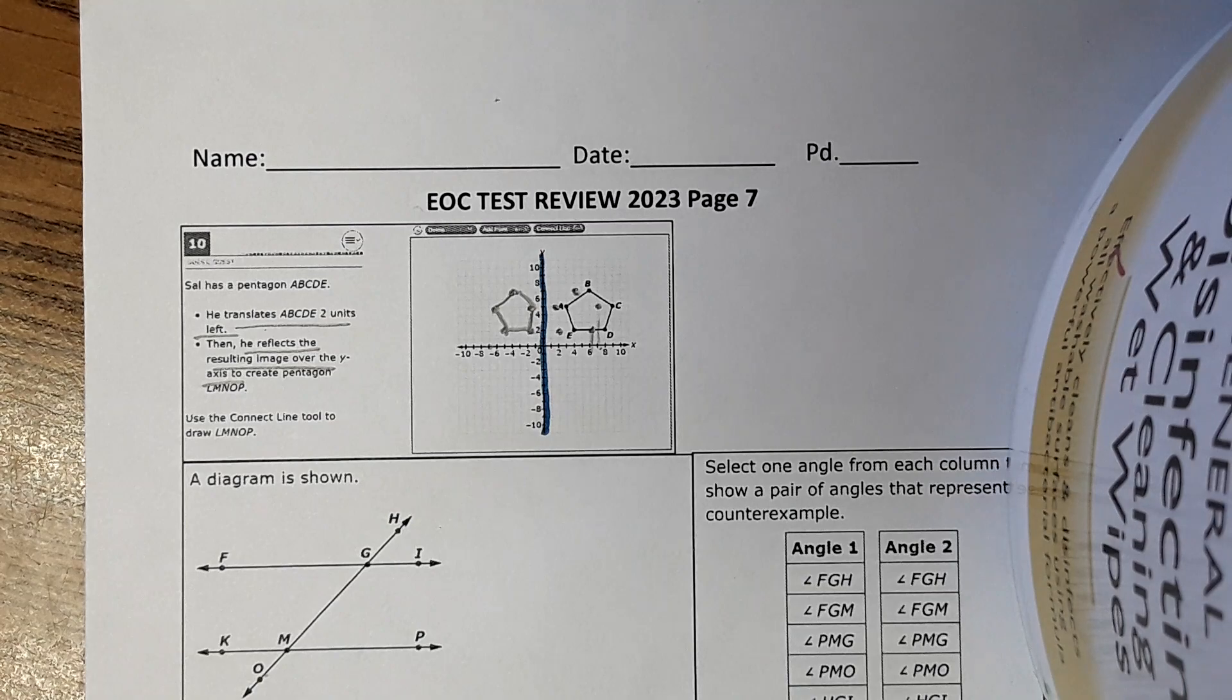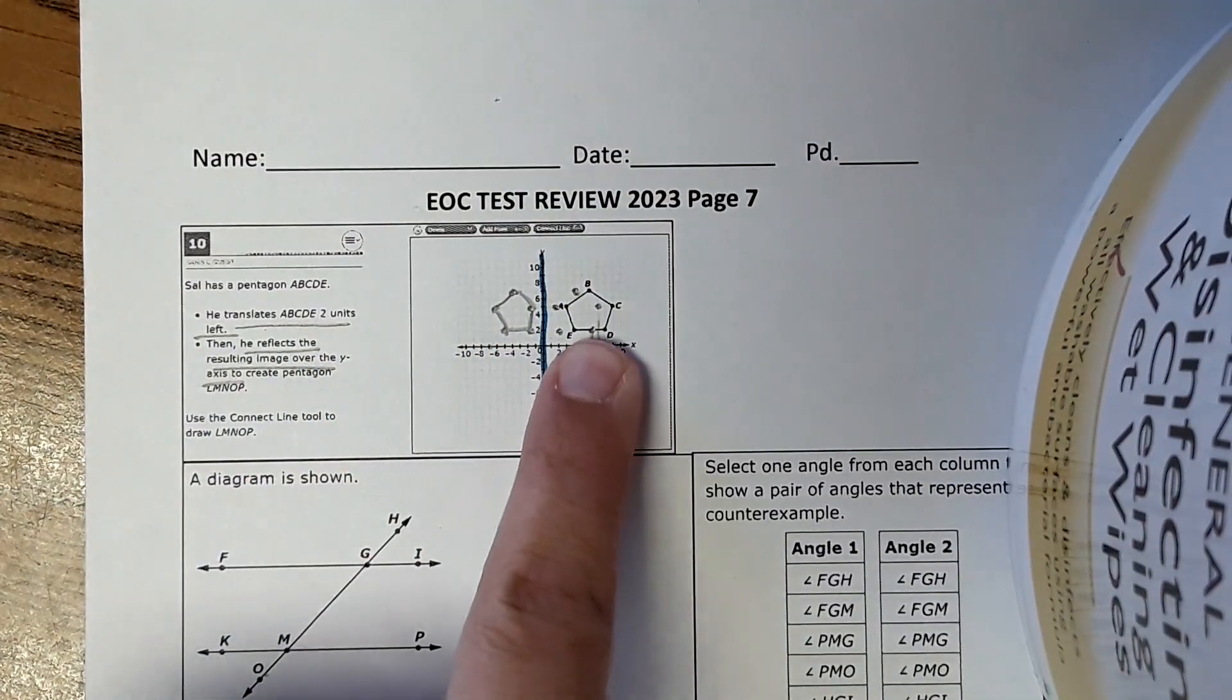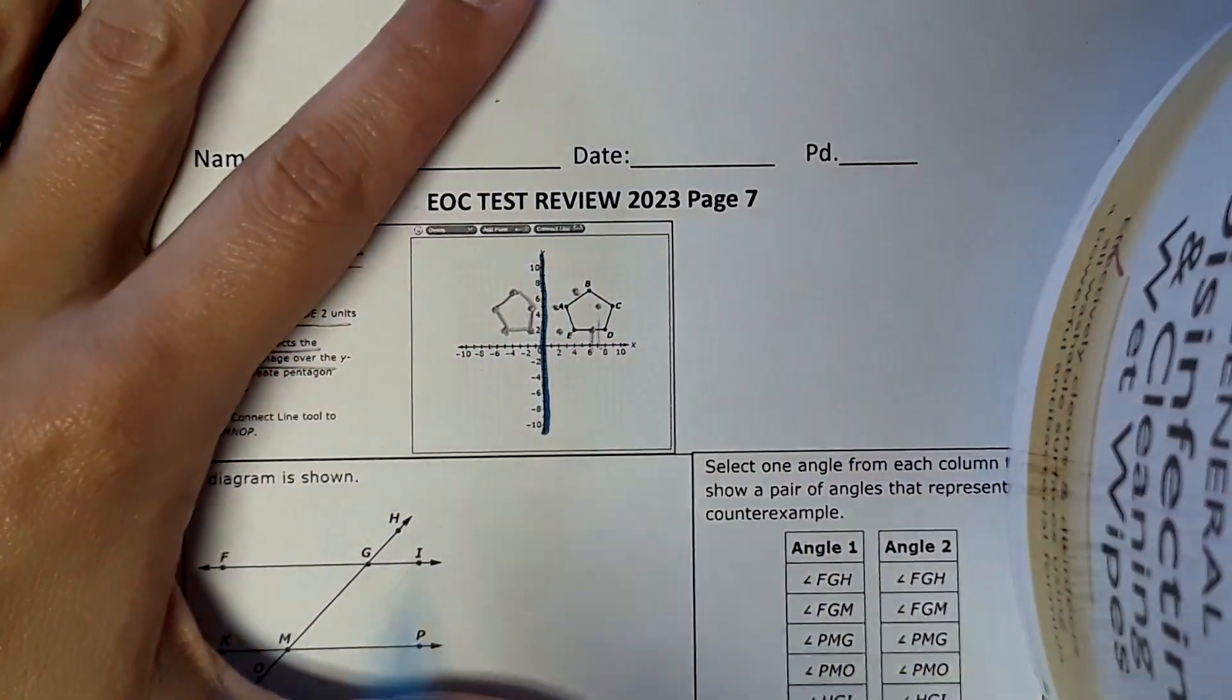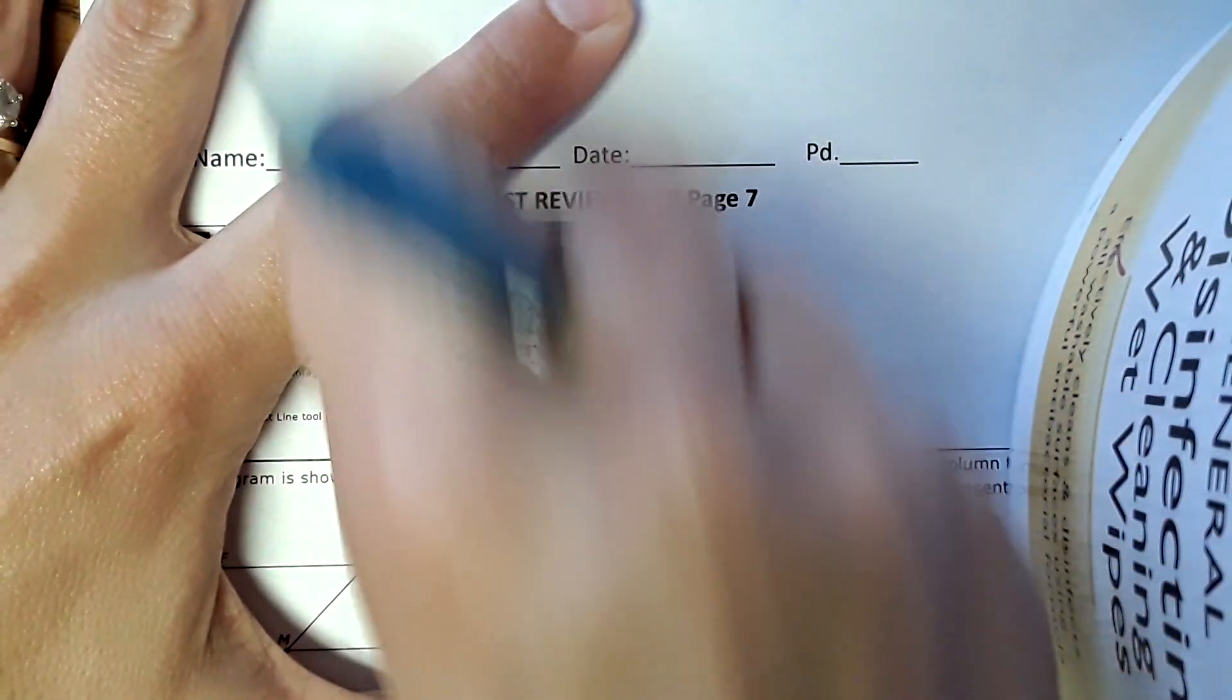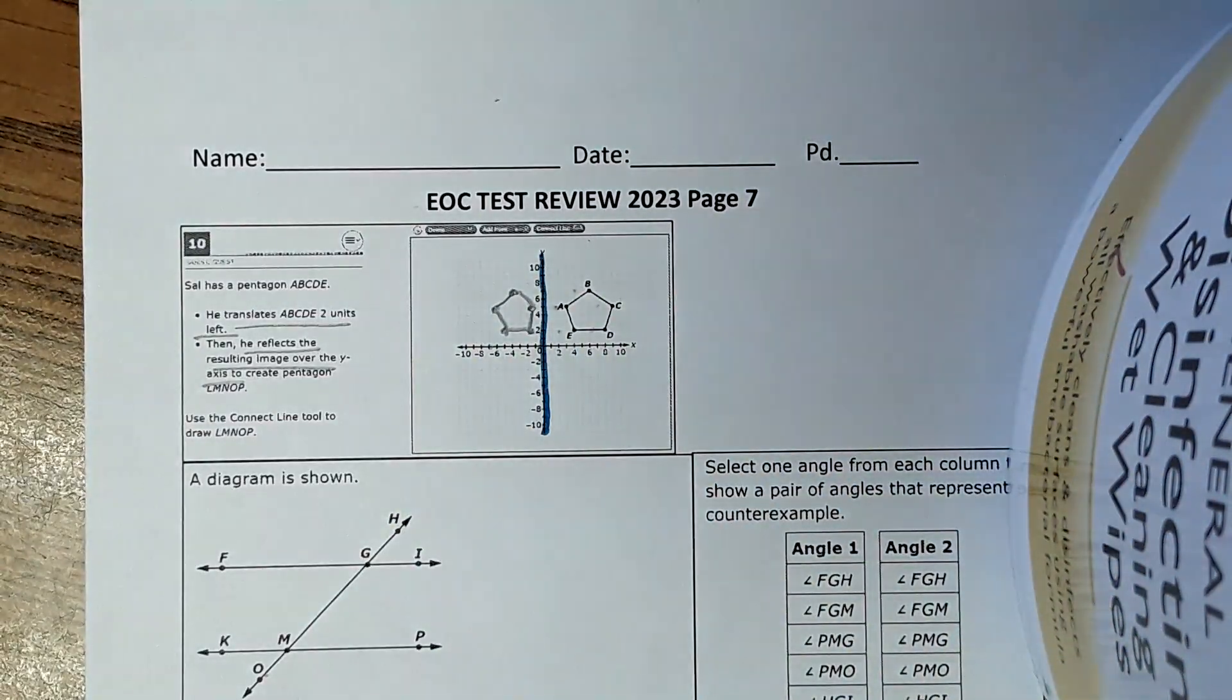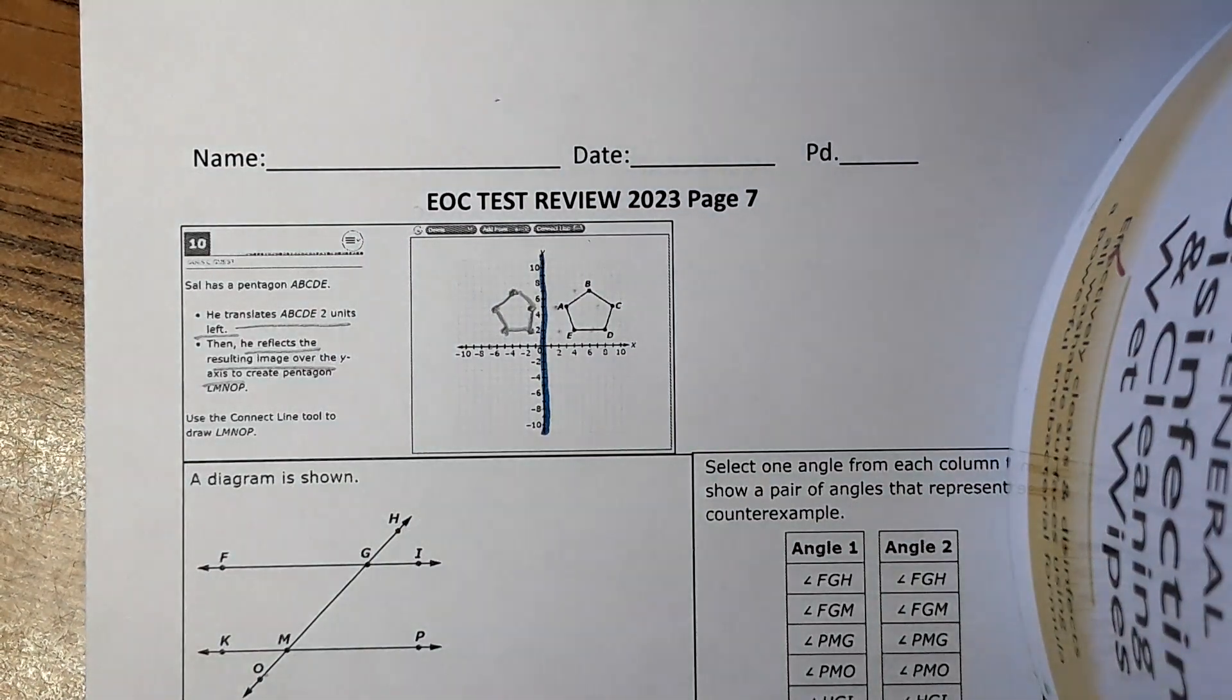Then the last step that I would do is I would erase or delete those points right there because those aren't part of the answer, it's just part of the process. So go ahead and delete all those, erase them. We had to graph them to figure it out, but it's not part of the answer.